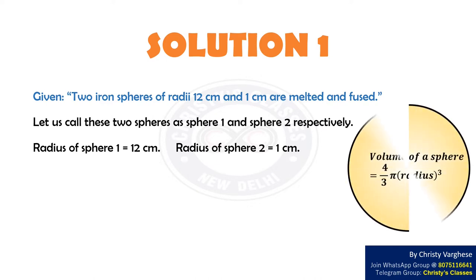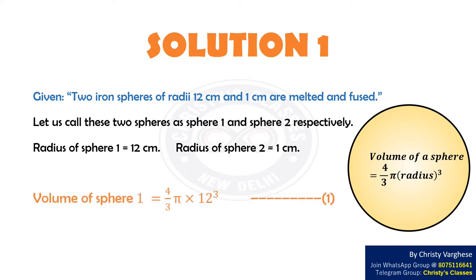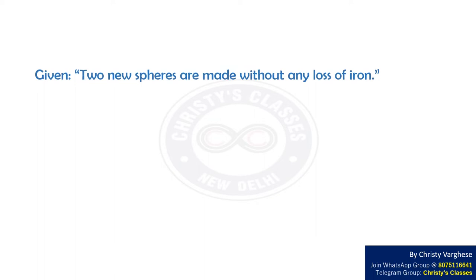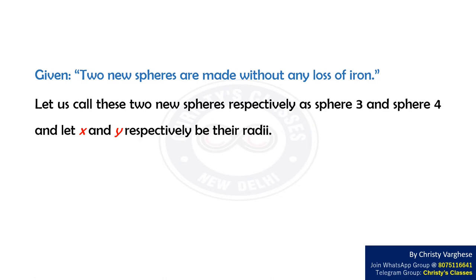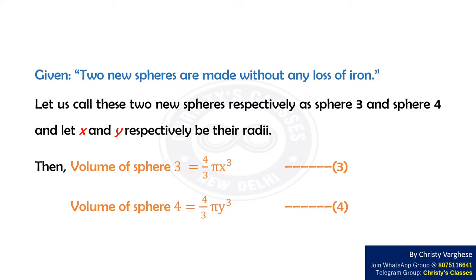We know that volume of a sphere equals (4/3)πr³. Therefore, volume of sphere 1 equals (4/3)π×12³ and volume of sphere 2 equals (4/3)π×1³, named as equations 1 and 2 respectively. Also, two new spheres — sphere 3 and sphere 4 — are made, with respective radii x and y. Volume of sphere 3 equals (4/3)πx³ and volume of sphere 4 equals (4/3)πy³, named as equations 3 and 4 respectively.